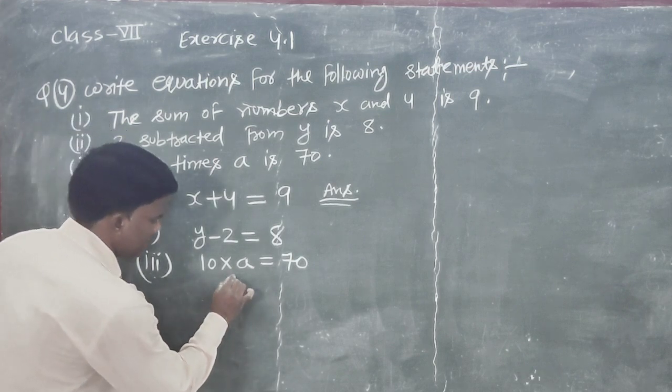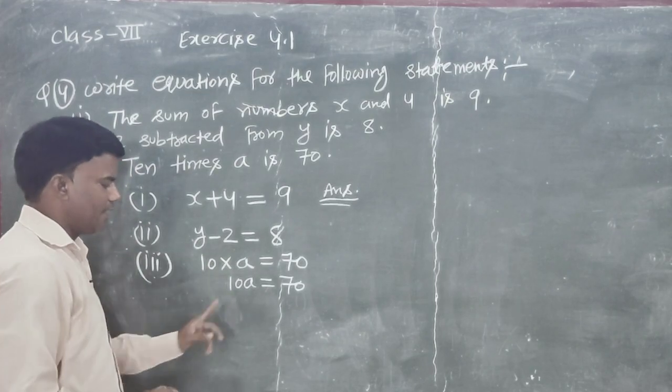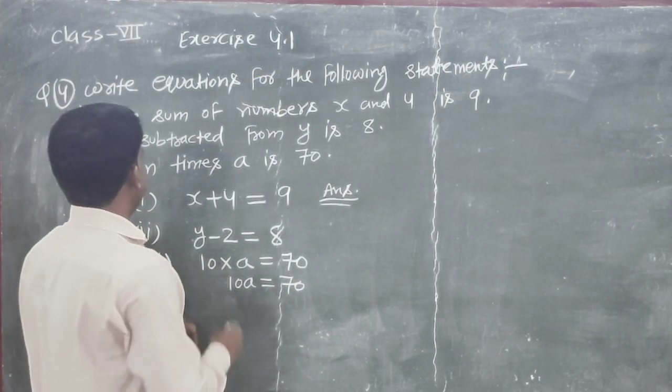10 times a is equal to 70. So 10a is equal to 70.